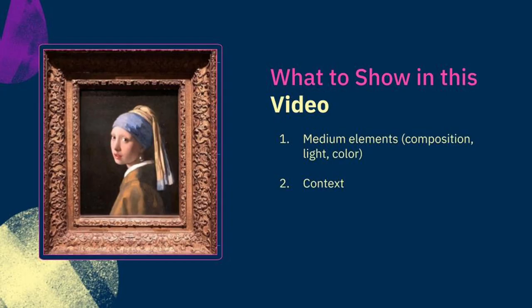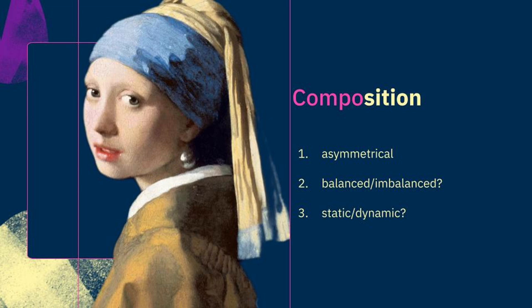In this video, I will analyze the medium elements and the context of Girl with a Pearl Earring. The composition of this painting is simple but attractive — asymmetrical, yet achieving balance through the girl's position. The girl is positioned against a dark background that enhances her luminous presence, looking toward the audience. The slight turn of her head and the placement of the earring draw the viewer's focus to her face. It's hard to tell if it is static or dynamic — she might just be staring at the artist, or turning her head to interact with the audience.